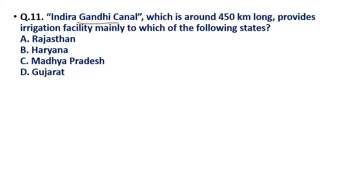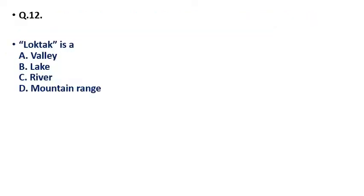Question 11: Indira Gandhi Canal, which is around 450 kilometers long, provides irrigation facility mainly to which of the following states — (a) Rajasthan, (b) Haryana, (c) Madhya Pradesh, (d) Gujarat? The correct answer is option A — Rajasthan.